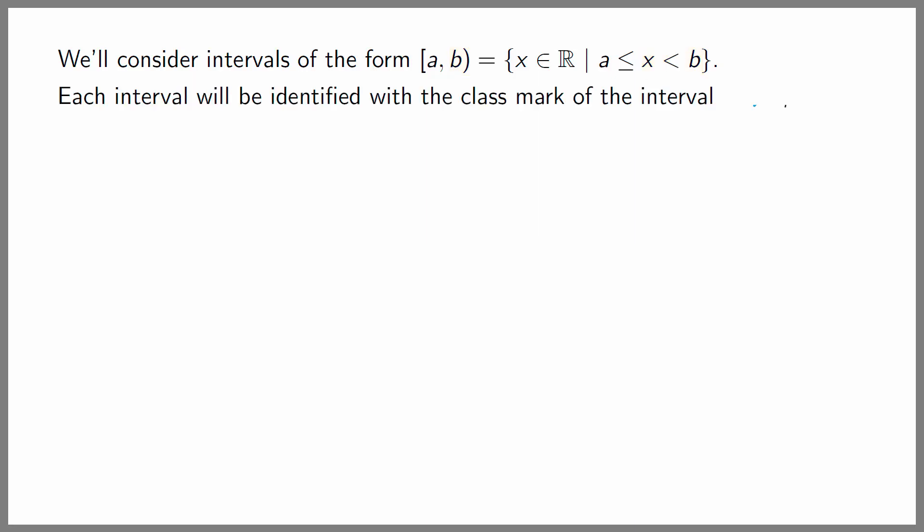Each interval will be identified with a number called the class mark of the interval, which corresponds to its midpoint. We'll denote the class mark of the interval by X sub i. So the class mark of the interval [A, B) is X sub i equal to its midpoint, which is A plus B divided by 2.